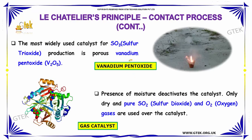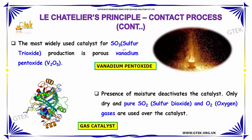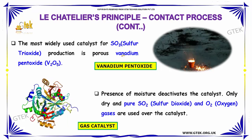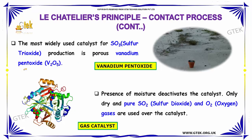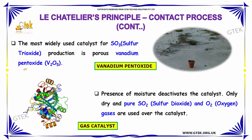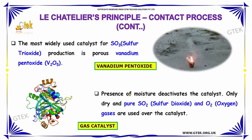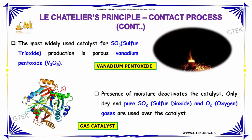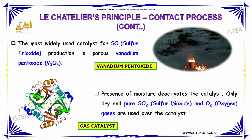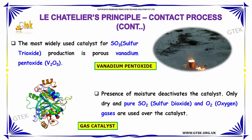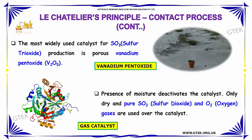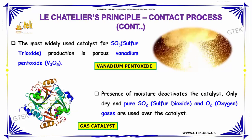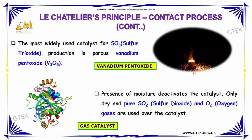The most widely used catalyst for sulfur trioxide production is porous vanadium pentoxide. The presence of moisture deactivates the catalyst, so only dry and pure SO₂ and oxygen gases are used over the catalyst.